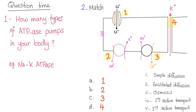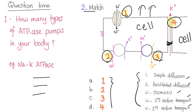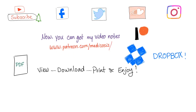Quiz time — two questions. Number one: how many types of ATPase pumps in your body do you know? I'll give you one: sodium-potassium ATPase. What other ATPases exist? Number two: match each scenario to the correct transport type — simple diffusion, facilitated diffusion, osmosis, primary active transport, or secondary active transport. Let me know your answers in the comments below. I'll answer in the next video — so please subscribe to my YouTube channel. Thank you so much for watching. As always, be safe, stay happy, and study hard.